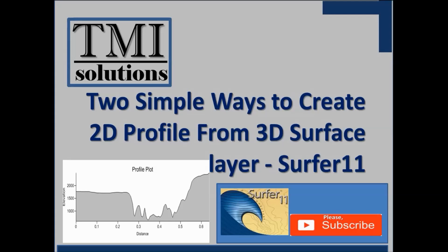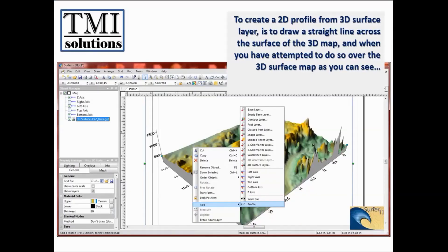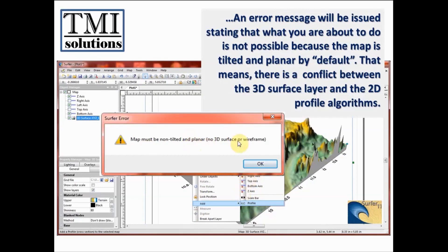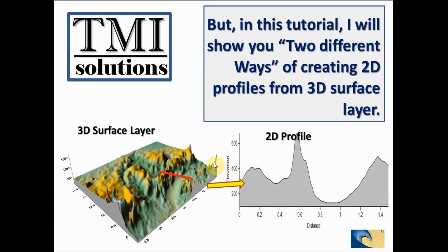Before I go into the demonstration, let me quickly give you an understanding of what I want to do. To create a 2D profile from a 3D surface layer, you draw a straight line across the surface of the 3D map. When you attempt to do so over the 3D surface map, an error message will be issued, stating that what you are about to do is not possible because the map is tilted and planar by default. That means there is a conflict between the 3D surface layer and the 2D profile algorithms.